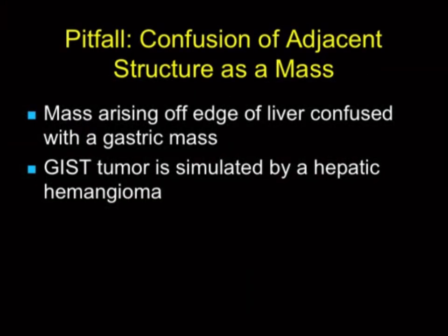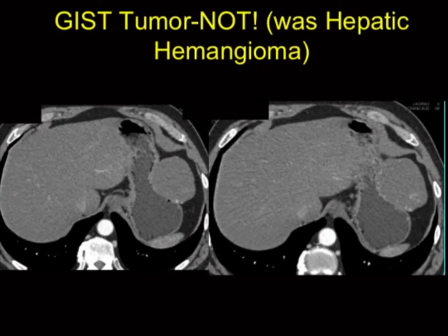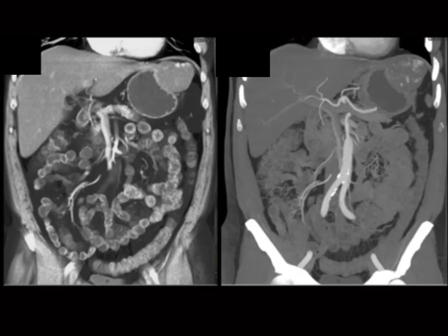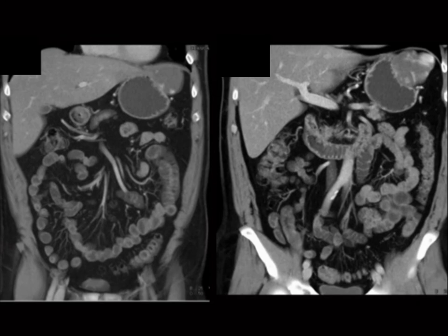Another pitfall: reading the report and assuming the history gives you the right answer, and when things are near other organs in a funny position you can be confused. A case was sent as a GIST tumor for preoperative planning — an exophytic gastric mass, classic GIST tumor, nothing to discuss. But as I was scanning, I noticed a little enhancement around the periphery. GIST tumors can enhance, but not around the periphery. And the lesion we thought was stomach actually touches the left lobe of the liver — it's pedunculated off the left lobe. We think of hemangiomas more commonly in the right lobe, intrahepatic, not exophytic — but sometimes tumors don't know what rules to follow.